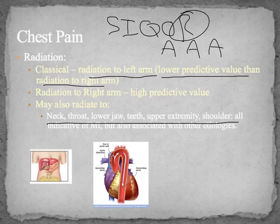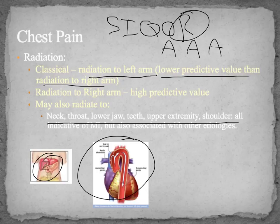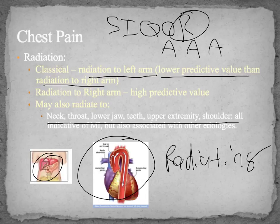You also have to consider other possible causes. For example, cholecystitis will present with upper quadrant pain and will also radiate to the shoulder. Chest pain radiating to the back between the scapula is indicative of an aortic dissection. So with radiating pain, you have to distinguish where it's going, and those can be clues in your history.